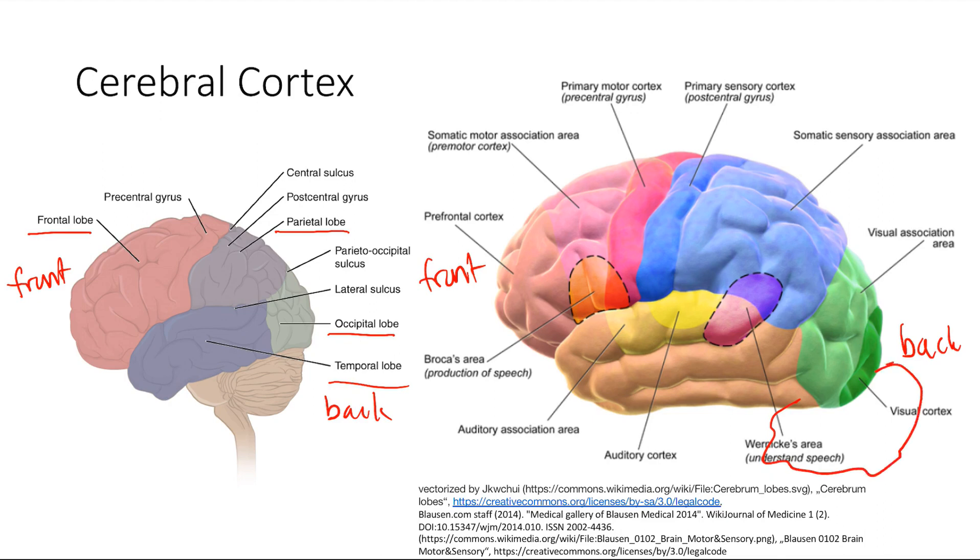First one here is Broca's area. It's very important—you're gonna hear about this a lot. This is important for production of speech. If you lose Broca's area, you cannot speak. We call it broken Broca. I'm gonna mention again: broken Broca.